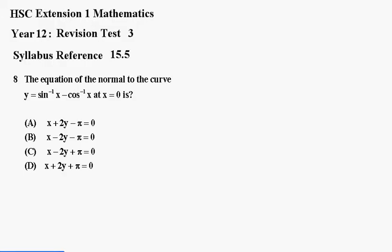Now we need to differentiate these. We'll get the gradient. So dy dx equals 1 over the square root of 1 minus x squared minus minus 1 over the square root of 1 minus x squared. And that becomes 2 over the square root of 1 minus x squared.